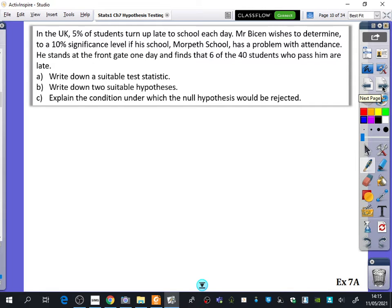Mr. Bison wishes to determine to a 10% significance level if his school, Morpeth School, has a problem with attendance. He stands at the front gate one day and finds that six of the 40 students who pass him are late. And I'm going to write down the test statistic, two suitable hypotheses, and then I'll try and explain when we would reject the null hypothesis.